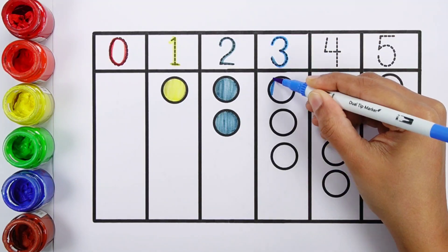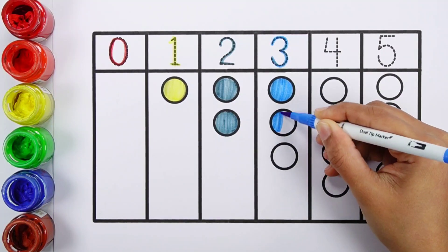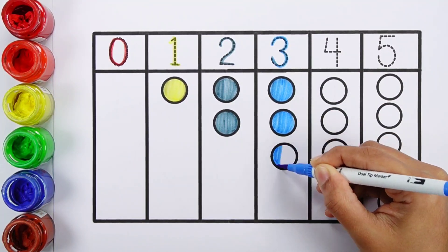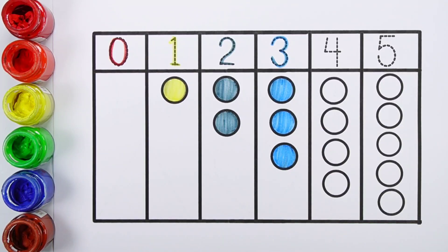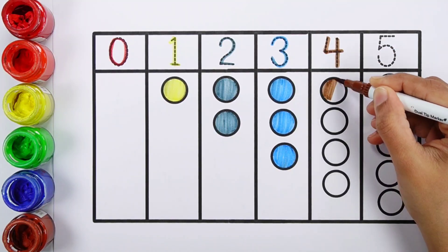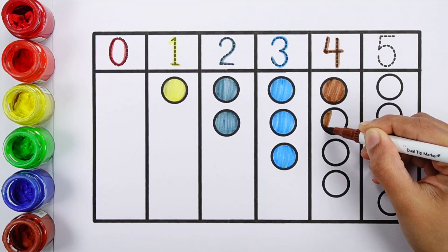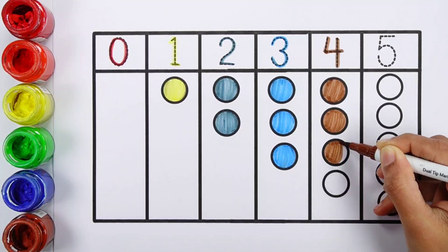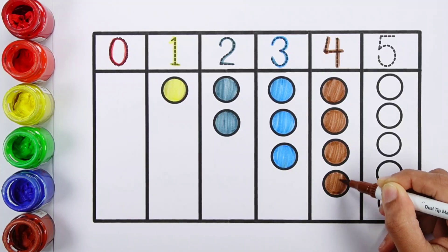Three — one, two, three circles. Number Four — one, two, three, four circles.